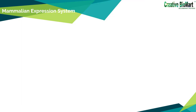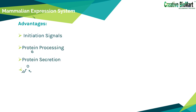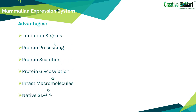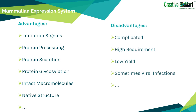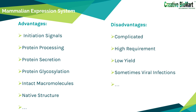The mammalian expression system has unique advantages in protein initiation signals, processing, secretion, and glycosylation, and is suitable for expressing intact macromolecules. The foreign protein produced by mammalian cells is closer to the native protein and has much more biological activity than proteins produced by prokaryotic expression systems or other eukaryotic expression systems such as yeast and insect cells. The disadvantages of this technique are its complexity, high requirements, low yield, and the occasional risk of viral infections.